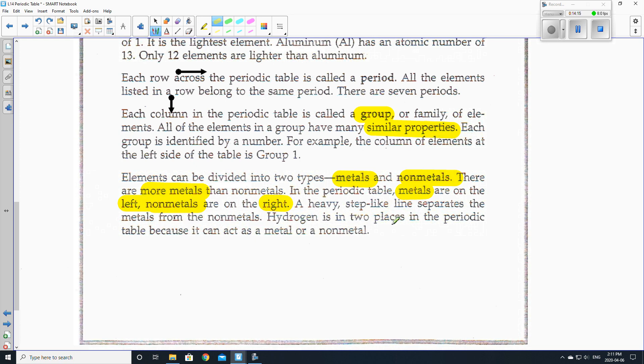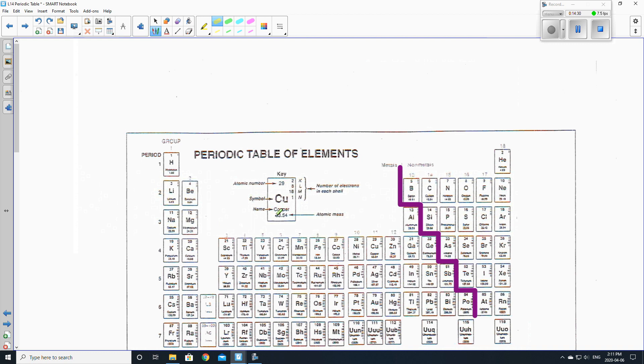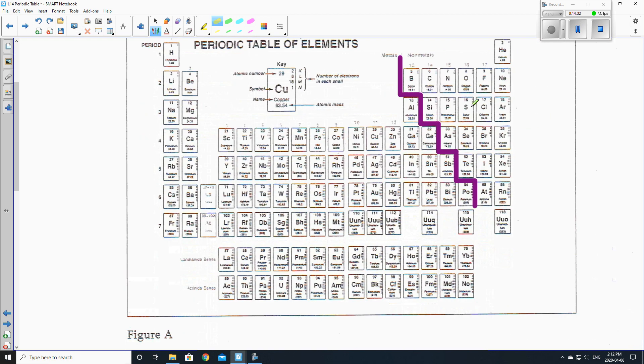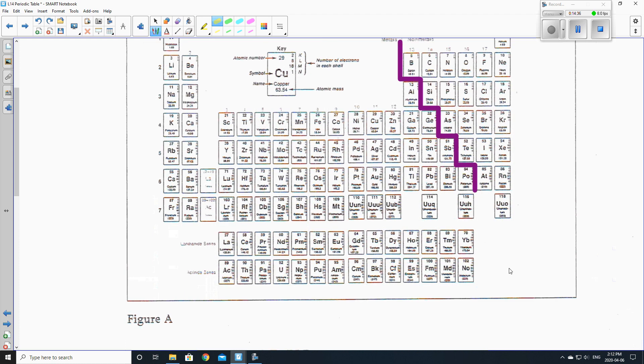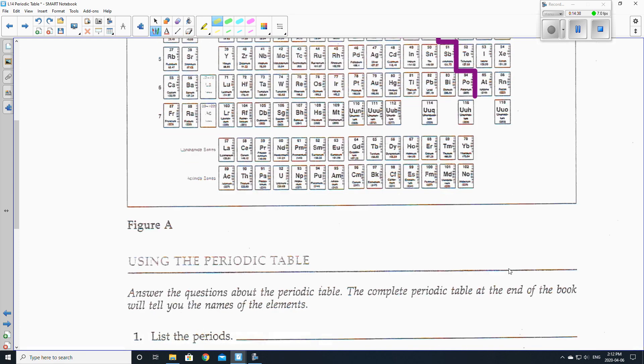Elements can be divided into two types, metals and non-metals. There are more metals than non-metals. In the periodic table, metals are on the left, so metals left, non-metals on the right. A heavy step-like line separates the metals from the non-metals. Hydrogen is in two places in the periodic table because it can act as a metal or a non-metal. On our periodic table, it only appears on the left-hand side, so it's kind of like put in the same place as all the metals. But that's okay. So here we go. You may want to add in the step case right over here as well. You may want to copy that down.